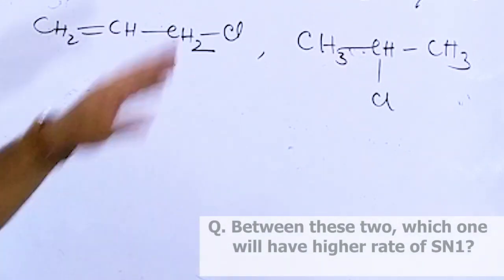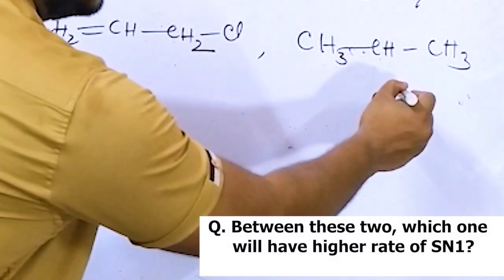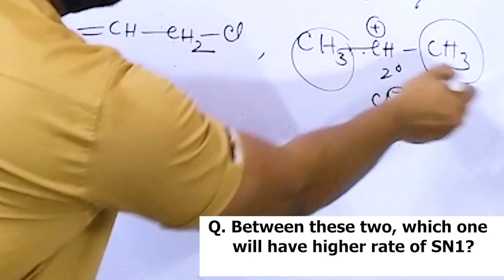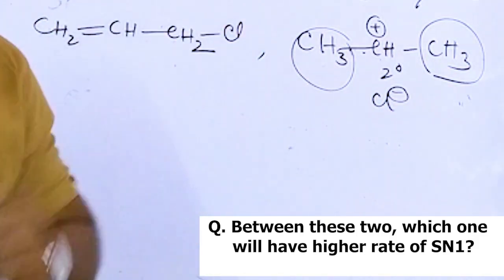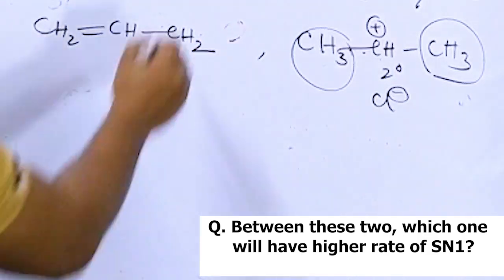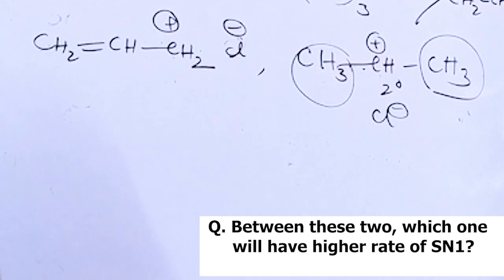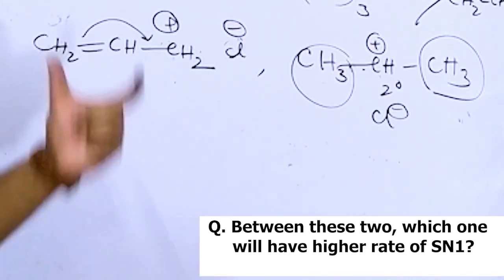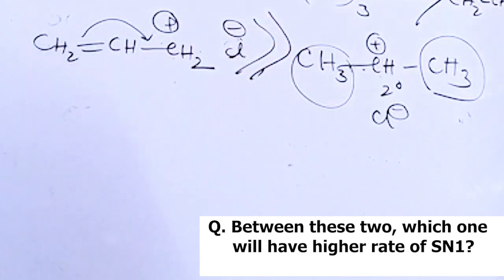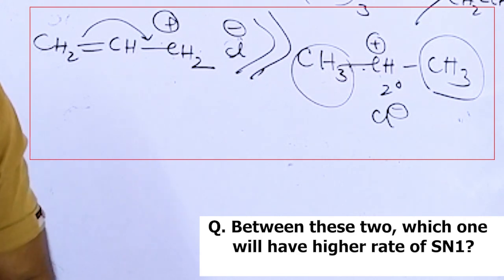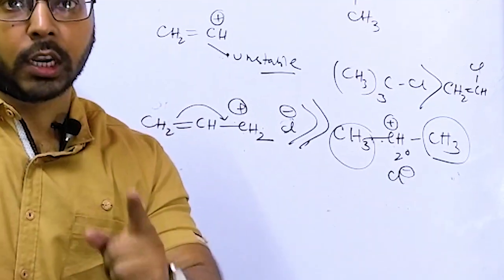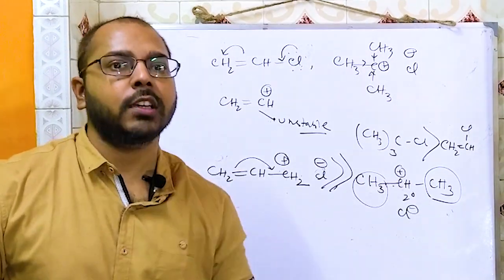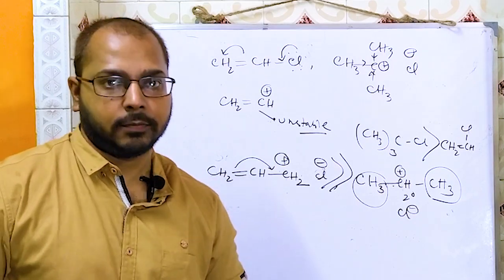In 2-chloropropane, elimination of chlorine gives a 2-degree carbocation attached to 2 carbon atoms. In 3-chloropropene (allyl chloride), elimination of chlorine gives only a 1-degree carbocation, but there is resonance support which is totally absent in 2-chloropropane. If the carbocation is primary but resonance stability is present, the rate of SN1 will be higher. So 3-chloropropene gives SN1 faster.